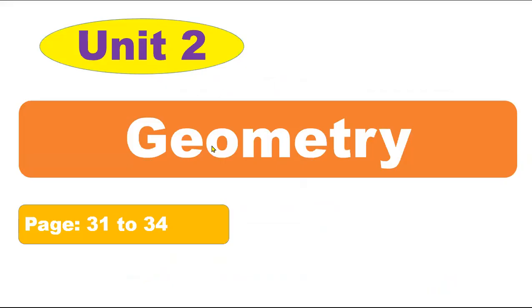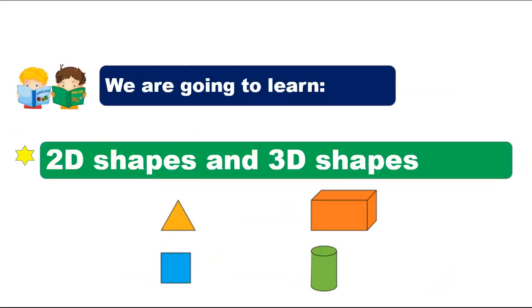In the previous class we learned about 2D and 3D shapes. You can watch my previous video to learn about what 2D and 3D shapes are. Let me revise for you: look at this triangle — this triangle has one face and three sides. We call this shape 2D because it has only one face.